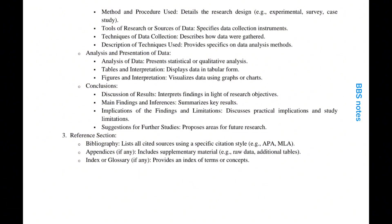3. Reference section — bibliography lists all cited sources using a specific citation style (e.g., APA, MLA). Appendices, if any, include supplementary material such as raw data and additional tables. Index or glossary, if any, provides an index of terms or concepts.